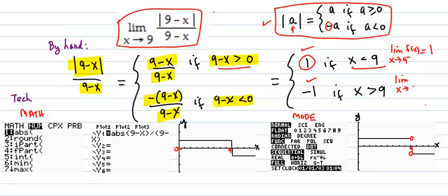Coming from the right of 9, as x goes to 9 from the right of the function, all those function values are negative 1. So the limit is negative 1. Those two limits are not equal. Therefore, the limit as x goes to 9 of f of x does not exist.